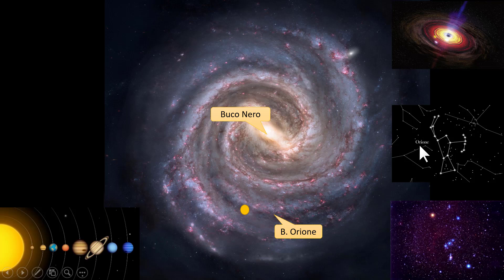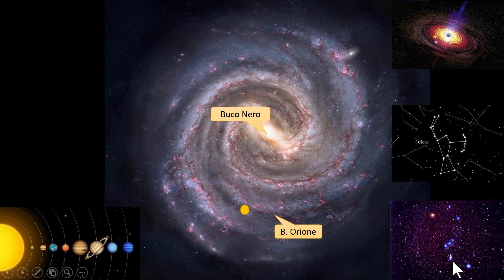This is the constellation as it appears on the star map; this is it in the photograph. You can see the star Betelgeuse, which is a red supergiant that's about to explode, and the other younger stars — because from their color we understand that they're very hot, and very hot stars live very little, so they can't be very old.